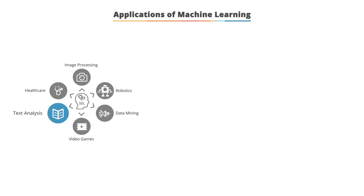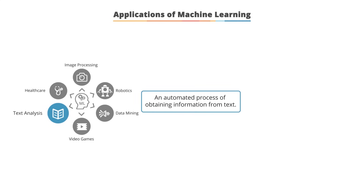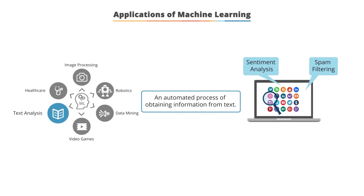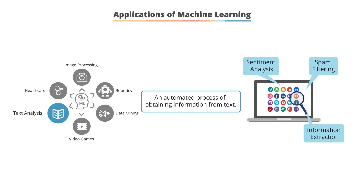Text analysis is one of the most popular applications of machine learning — it is the automated process of obtaining information from text. Examples include spam filtering to detect spam in emails, sentiment analysis to classify opinions as positive, negative, or neutral and detect public sentiment in Twitter feeds or filter customer complaints, and information extraction to pull specific data like addresses, keywords, or entities.